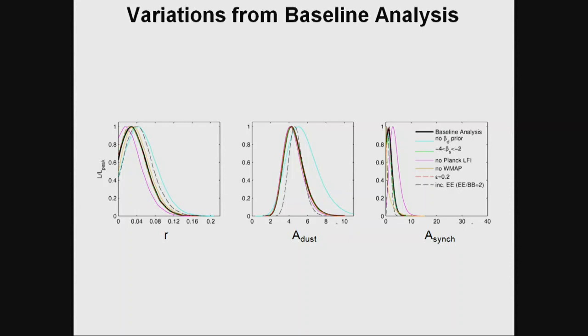But we've already started doing interesting inflationary science. At r ≈ 0.12–0.13 there is the famous φ² model, which just means the inflaton potential is a parabola. Up until this point that simple model could explain everything we see in the universe. But now that nice model is being disfavored by this result.